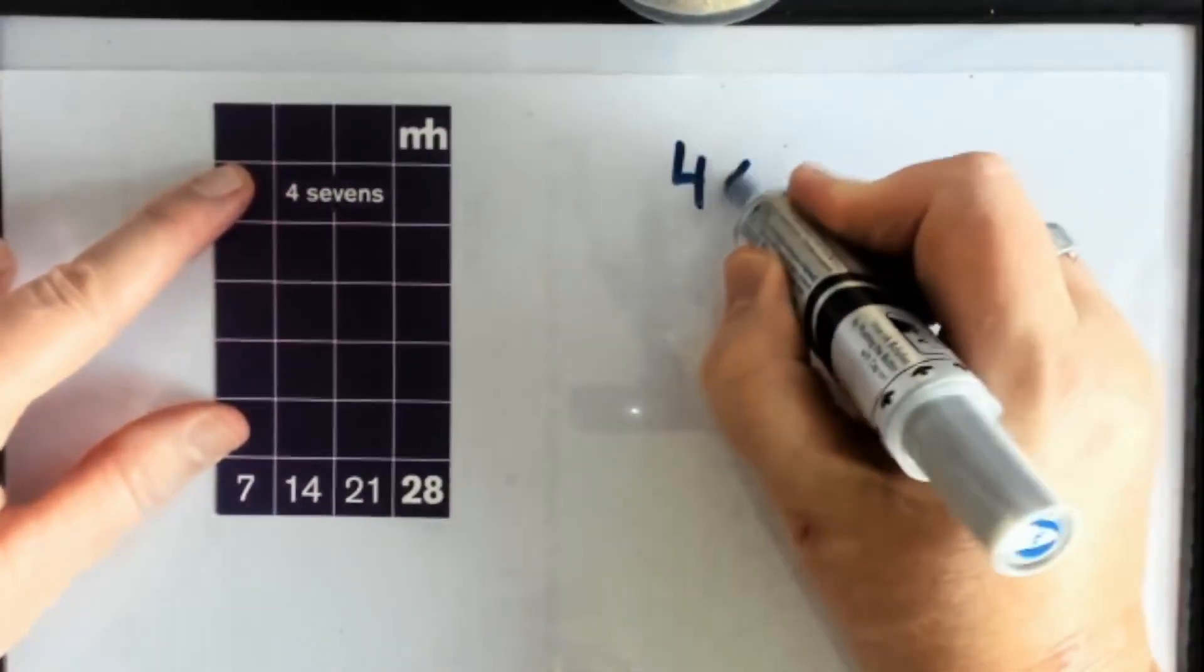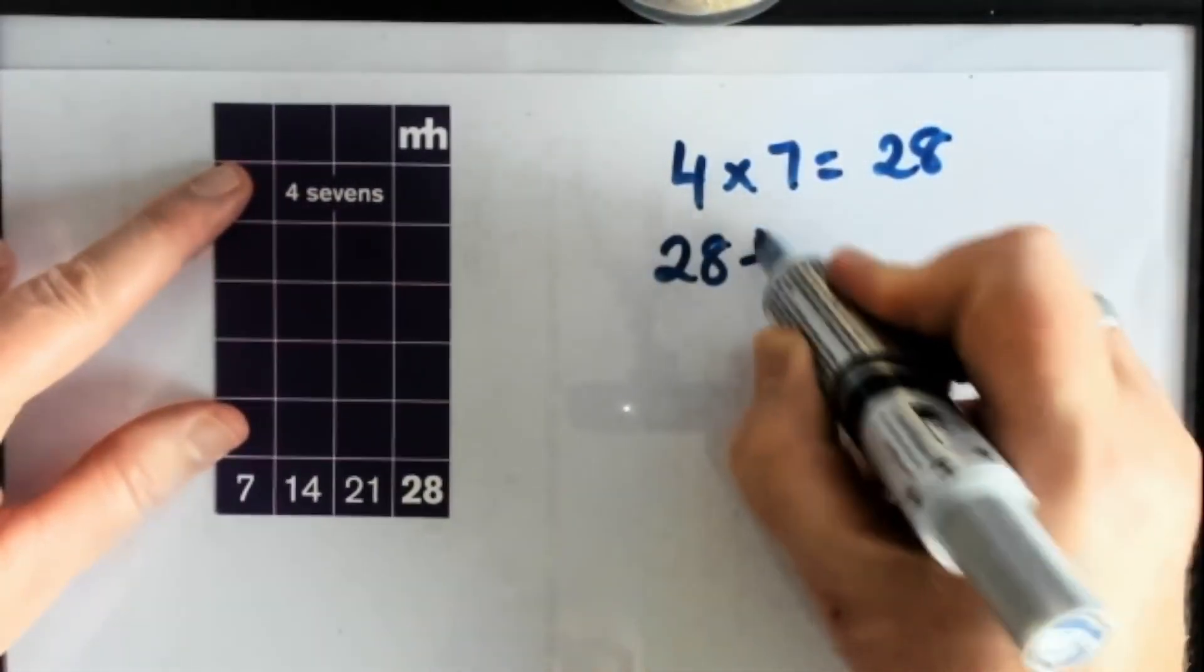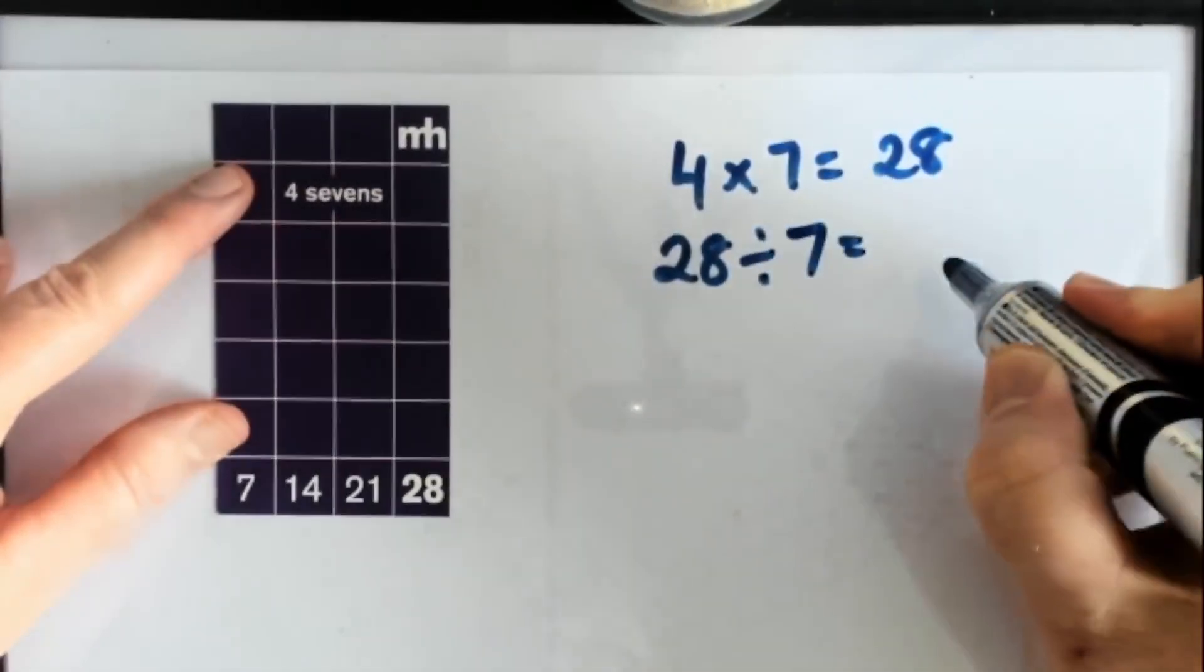So here I've got 4 sevens are 28. I also get for free, how many 7s are there in 28?